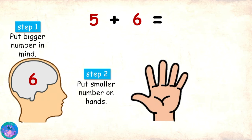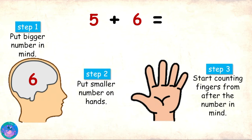Step 3. Start counting fingers from after the number in mind. The number in mind is 6. So, 7, 8, 9, 10, 11. So, the sum of 5 plus 6 is 11.